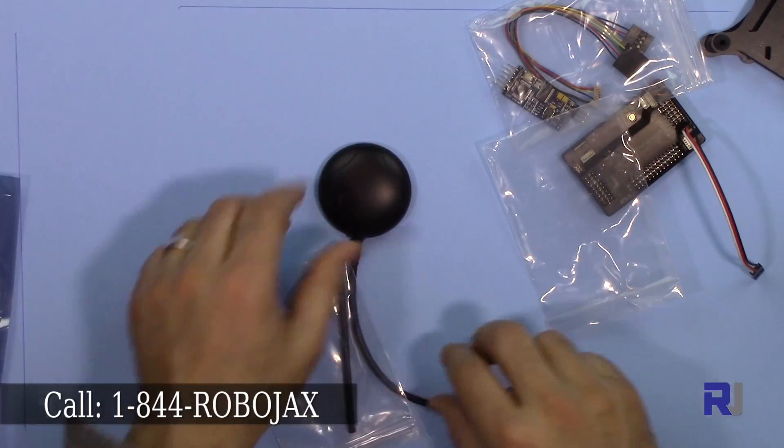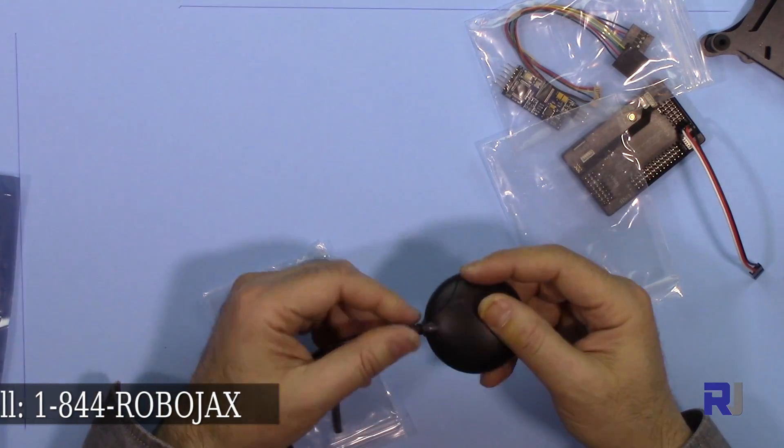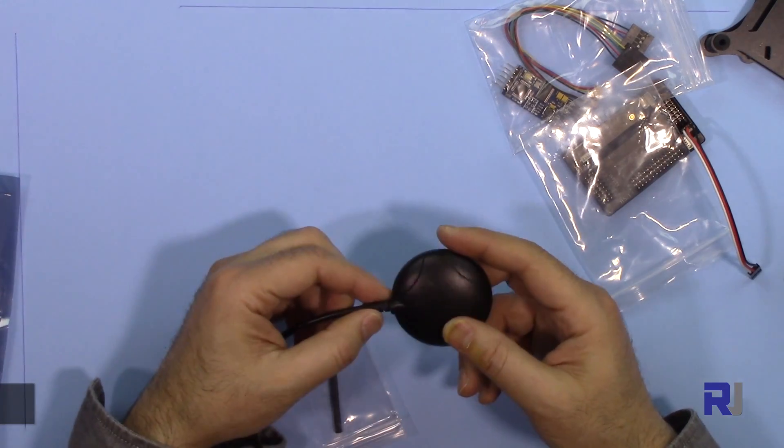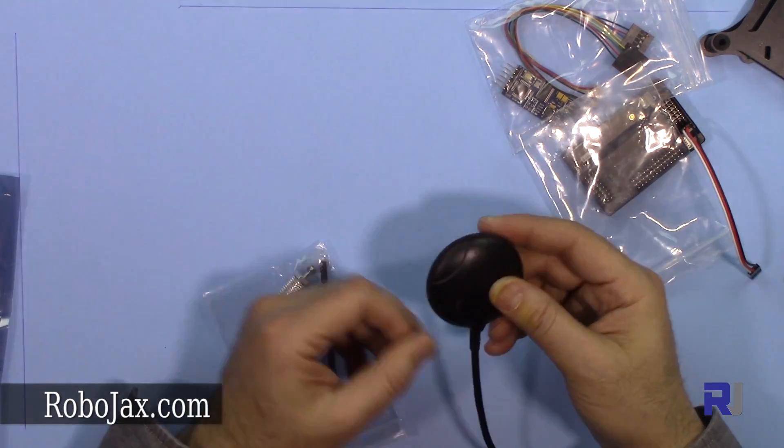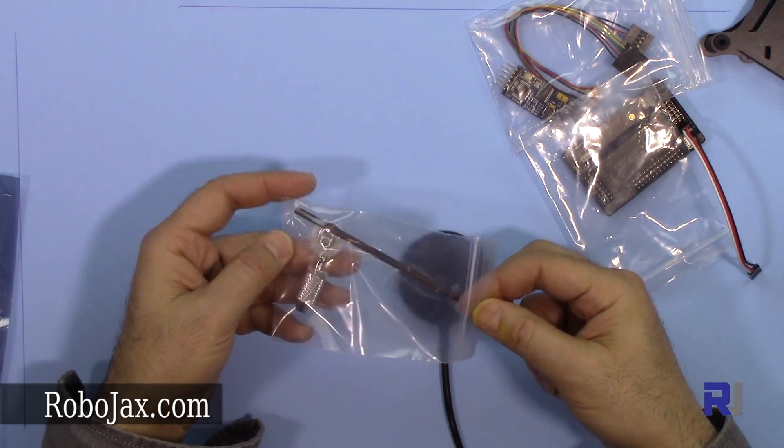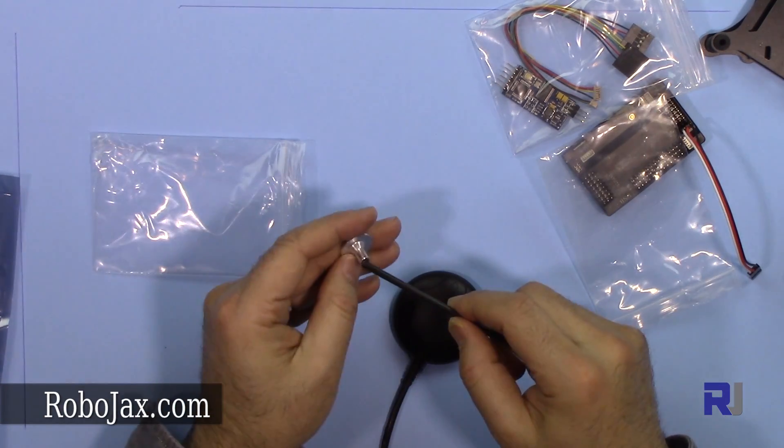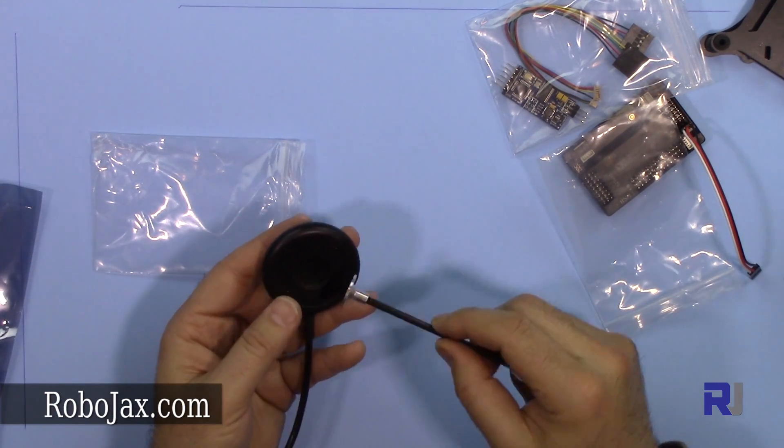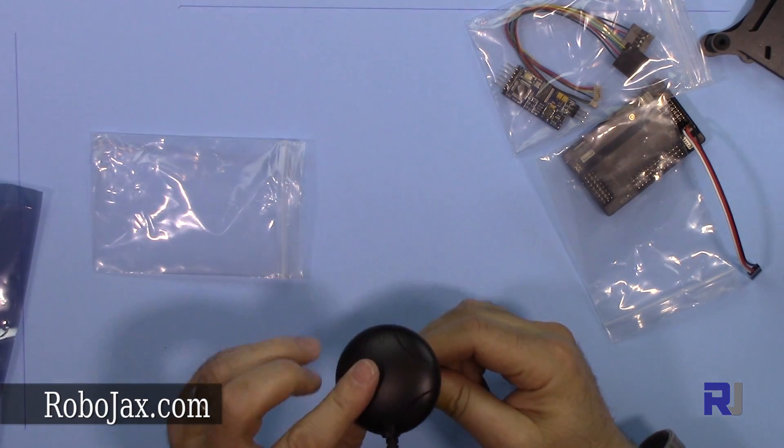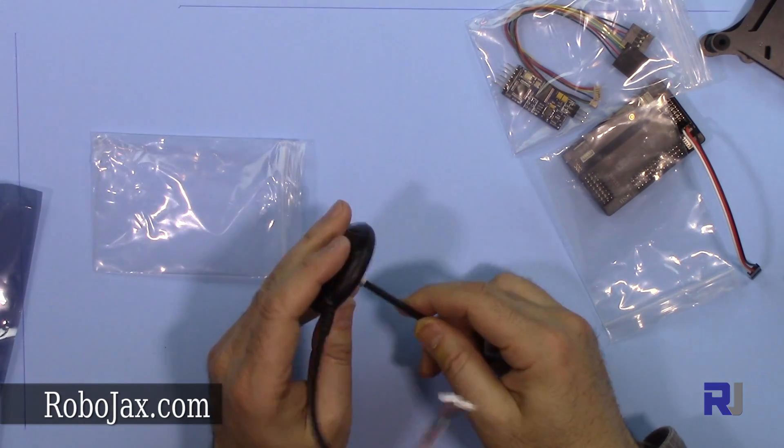We have the U-Blox M6 GPS. This GPS comes with a stand. This can be attached this way and will be attached with some simple adhesive here.